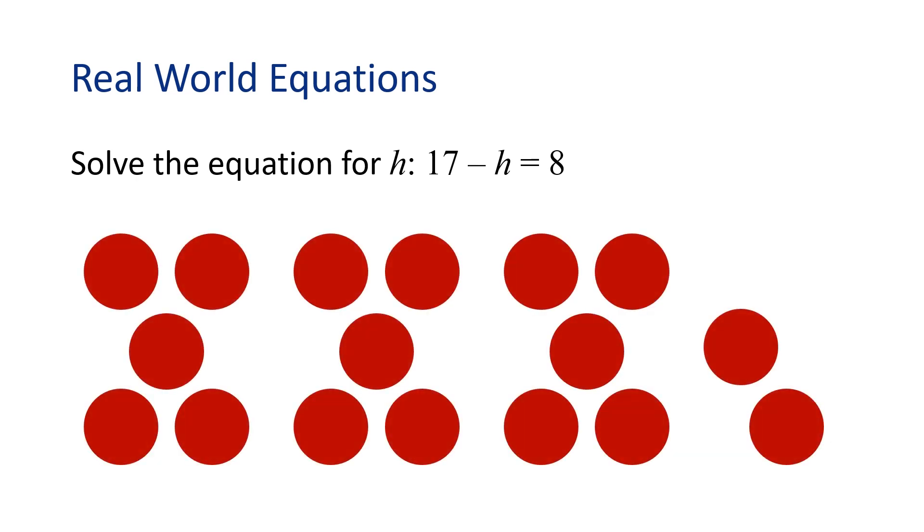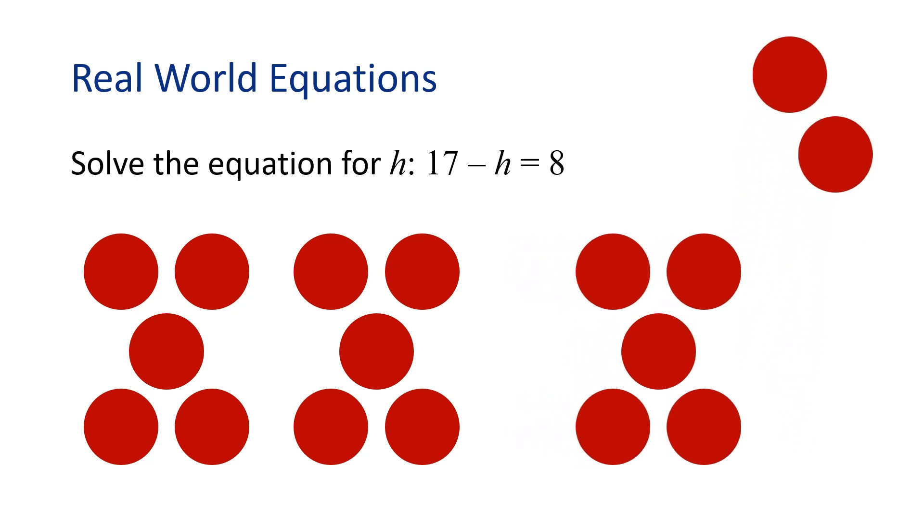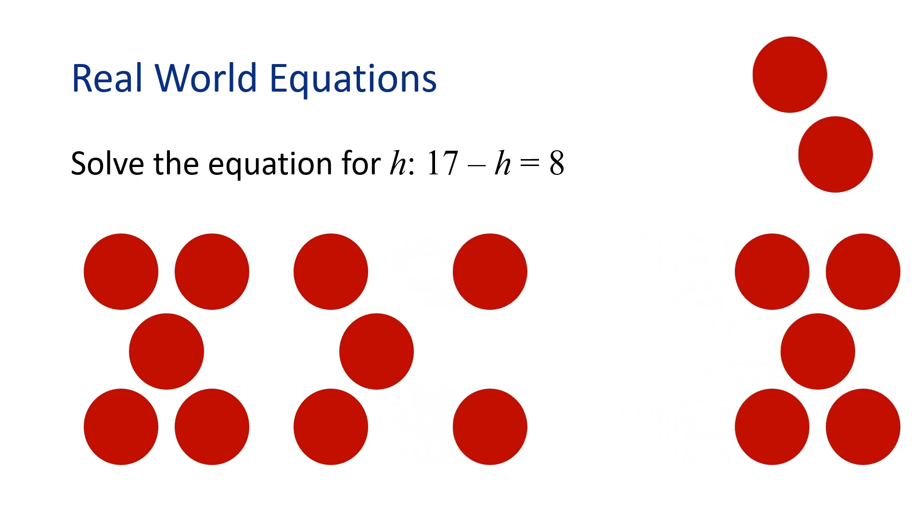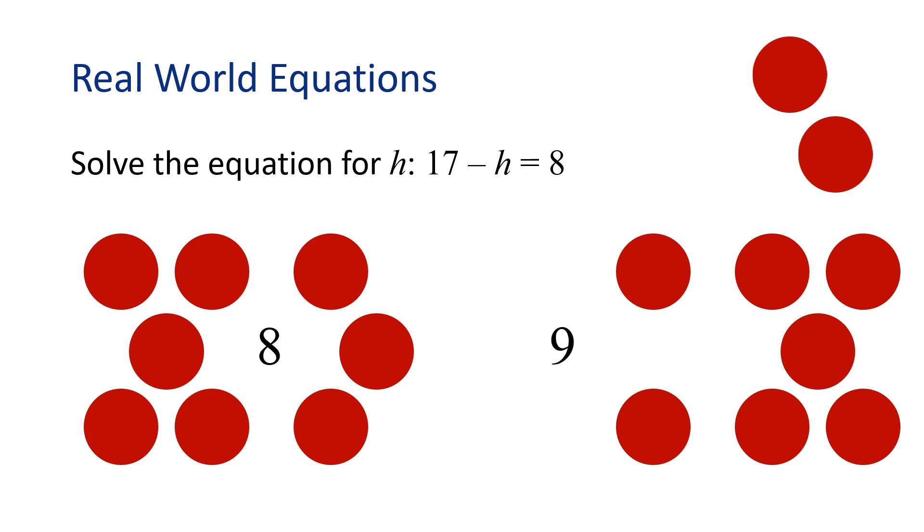Another way is using a model. We have 17 circles, and we need to take away an amount so only 8 are left. We now have 8 on the left. How many circles did we take away on the right? 9. So, h equals 9.